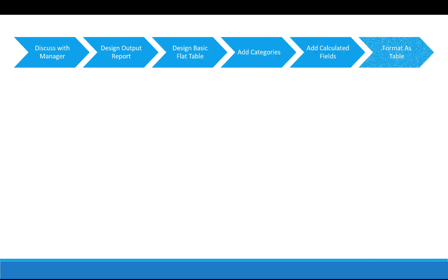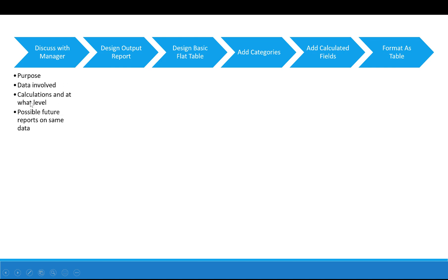Putting these concepts in a flowchart: discuss with your manager, design output reports, design the basic flat table, add categories, add calculated fields, and finally format the data as a table — a feature in Excel we'll look at later. When discussing with your manager, clarify the data involved, calculations needed, and at what level — employee, department, or regional. Also discuss future data or reports required from the same data, because you may want to start collecting data about it now while it's available.